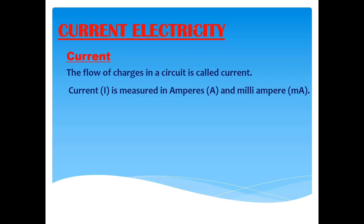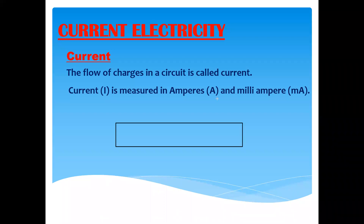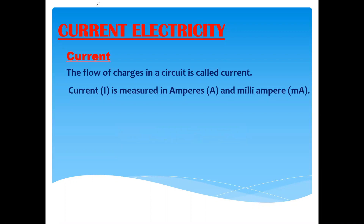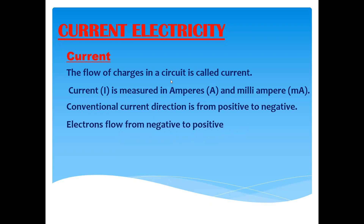Inside a metal conductor, charges are moving — electrons move but not in a straight line. Electrons move randomly with a net resulting direction, but there is continuous collision between the particles and the lattice. The number of charges flowing through the conductor in one second is defined as the electric current, with SI unit ampere, denoted by A.